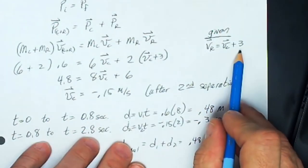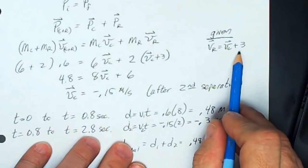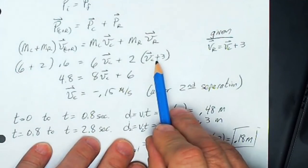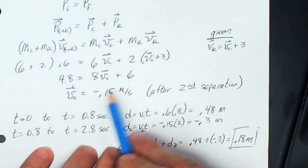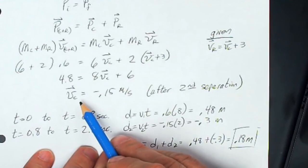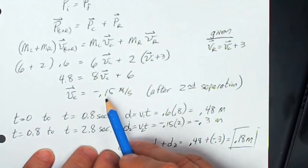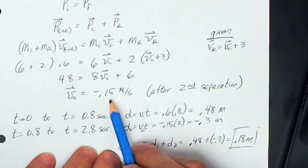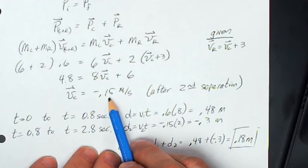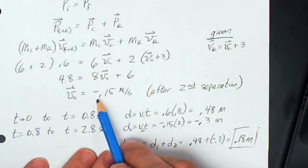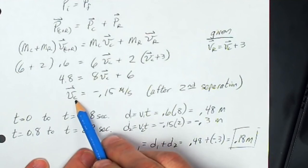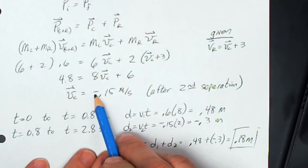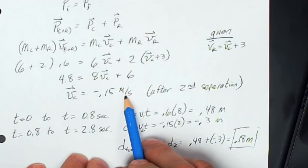Substituting VR = VC plus three into the momentum equation leaves only one variable. Solving for VC, the center block after the second separation is moving to the left — negative 0.15 meters per second with respect to the track.